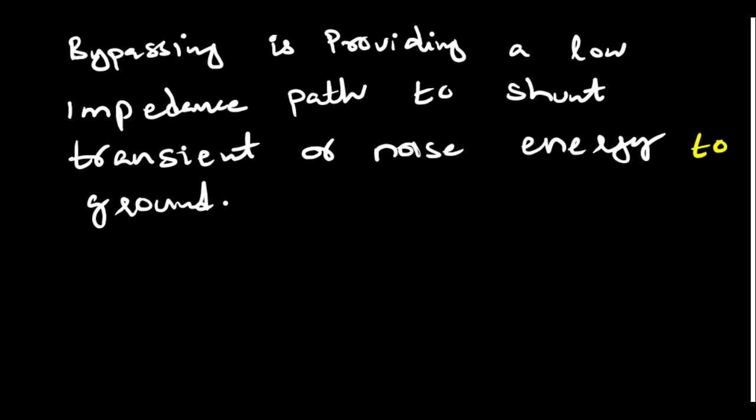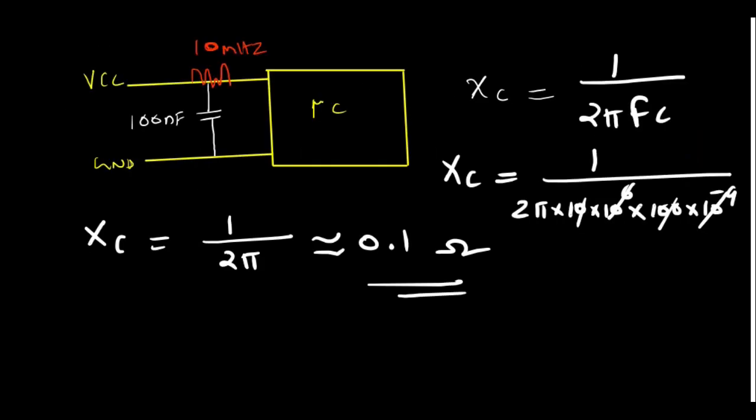DC it will get charged to DC. Also, one more thing I'll tell you. This will be charged with the DC. Then if there is a requirement for more current for the microcontroller or digital IC to switch, if you need more current, that current it could get from this capacitor. So that also smooths the power supply requirement.